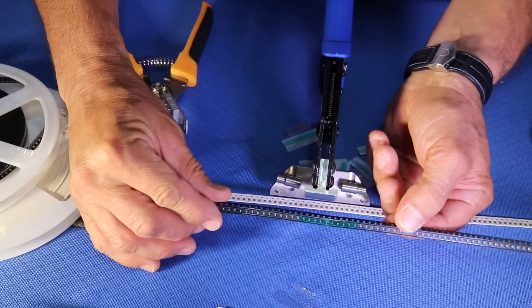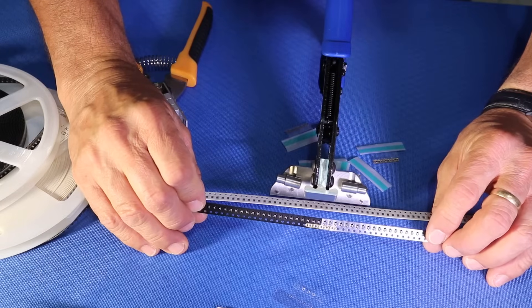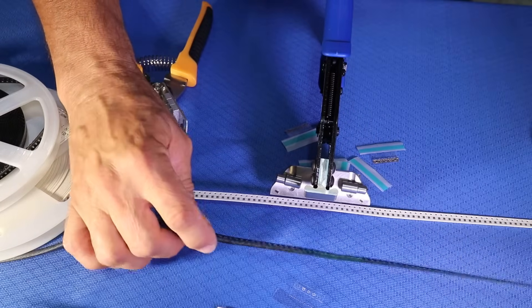So all you have is a splice on the top of the cover tapes and a splice on the bottom. It will run seamlessly through all pick and place machines.